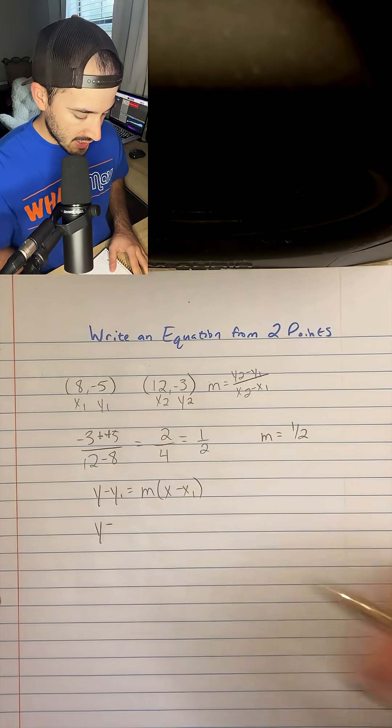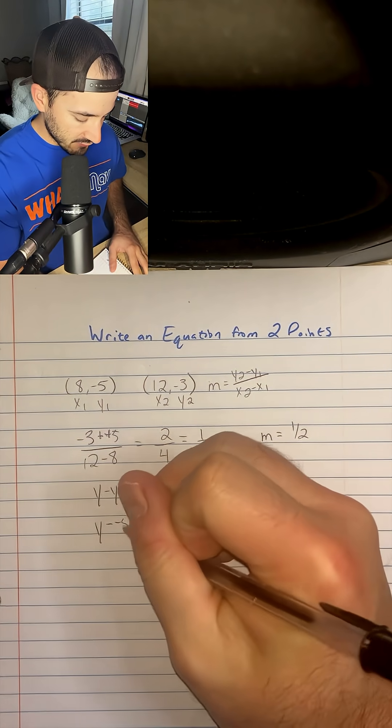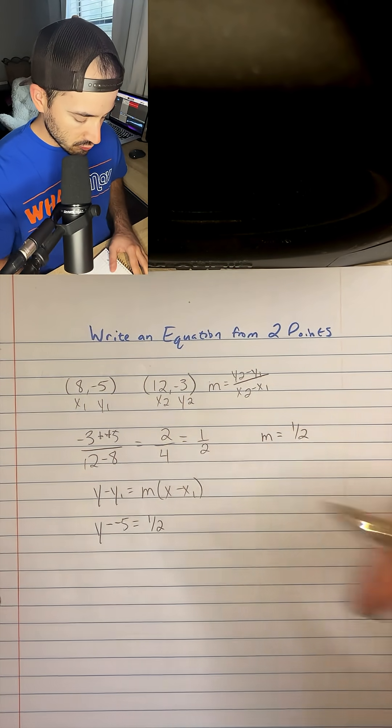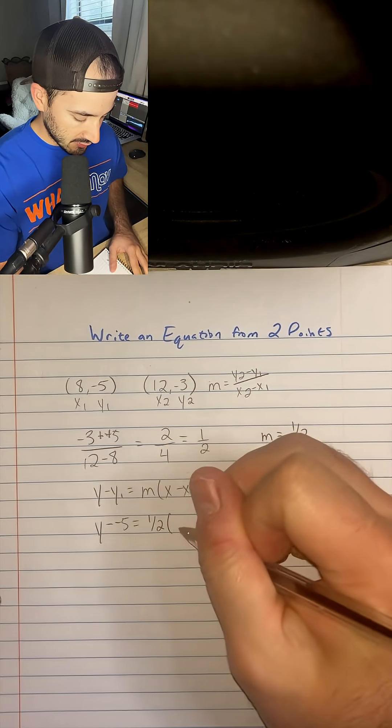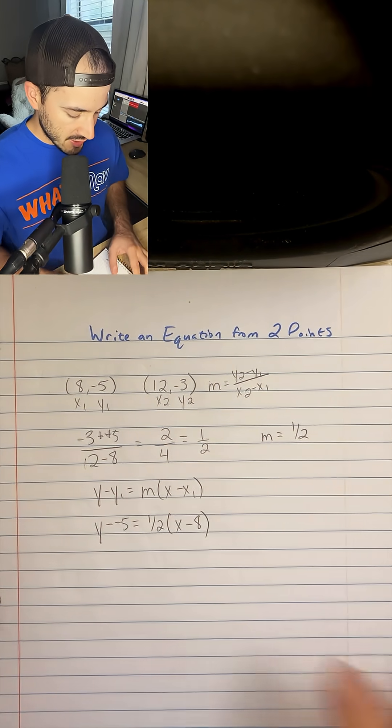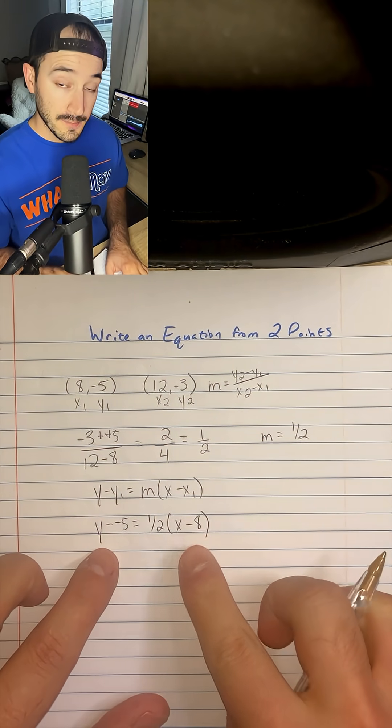So we're going to have y minus y1 is negative 5 equals m is 1 over 2 or 1 half, and then x minus x1 is 8. And so now we have our equation in point-slope form.